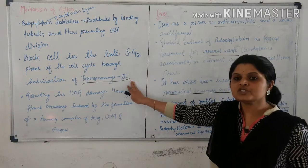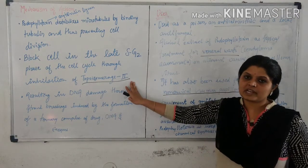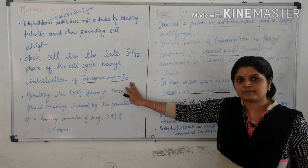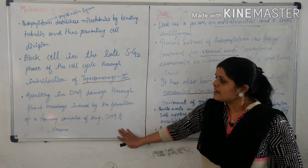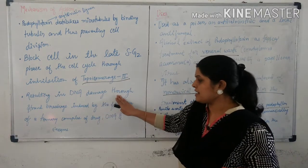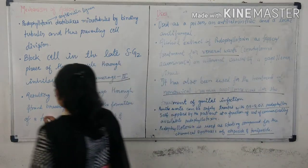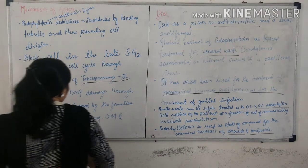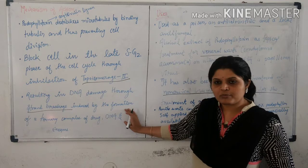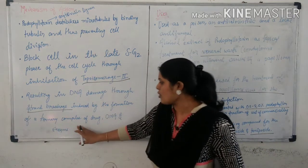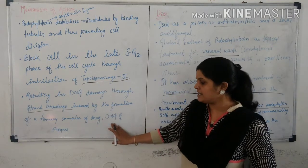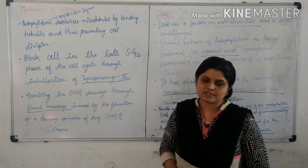It blocks the cell in the late S-G2 phase of the cell cycle. Inhibition of topoisomerase I and II results in DNA damage through strand breakage induced by formation of tertiary complex of drug, DNA and enzyme.